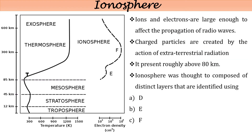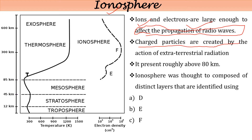The ionosphere is a region mainly composed of ions and electrons in sufficient quantities to affect the propagation of radio waves. Charged particles are created by the action of terrestrial radiation in this region, which is roughly above 80 kilometers of height. The ionosphere is composed of distinct types of layers, subdivided into the D layer, E layer, and F layer.